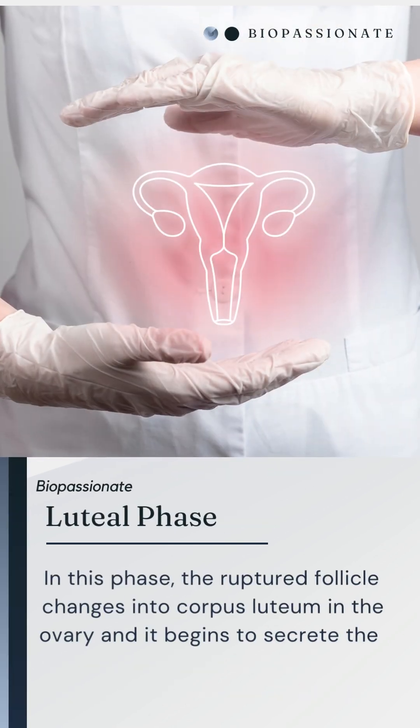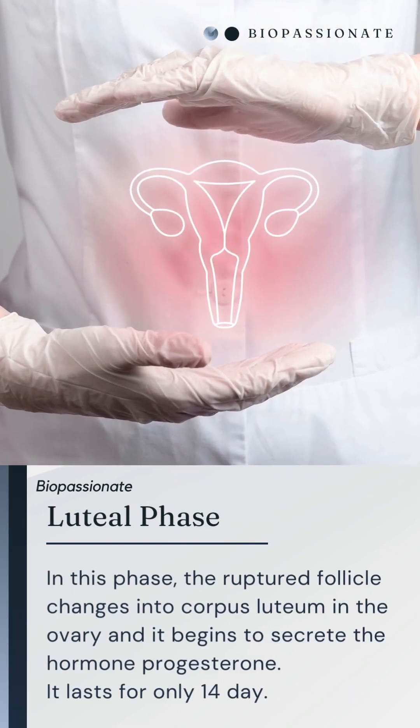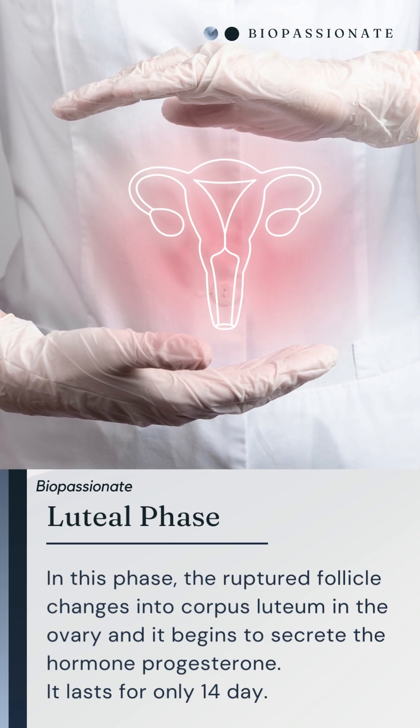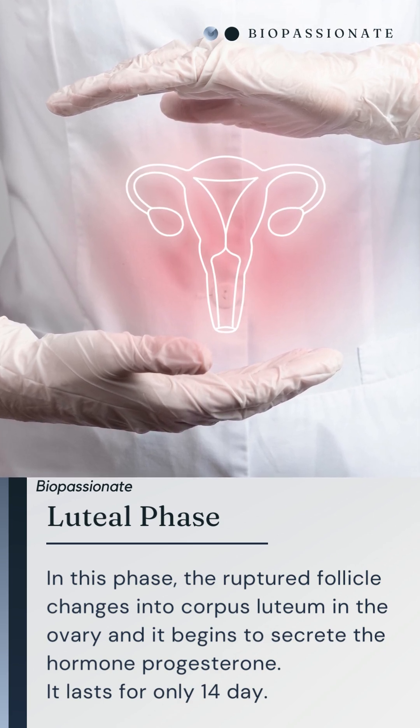During the luteal phase, the ruptured Graafian follicle becomes the corpus luteum to release progesterone.